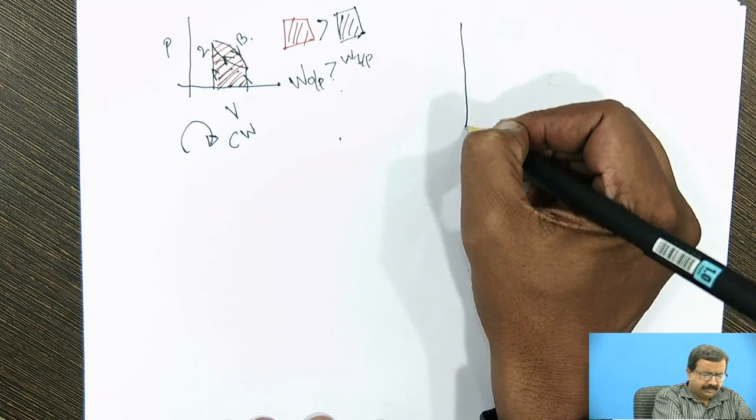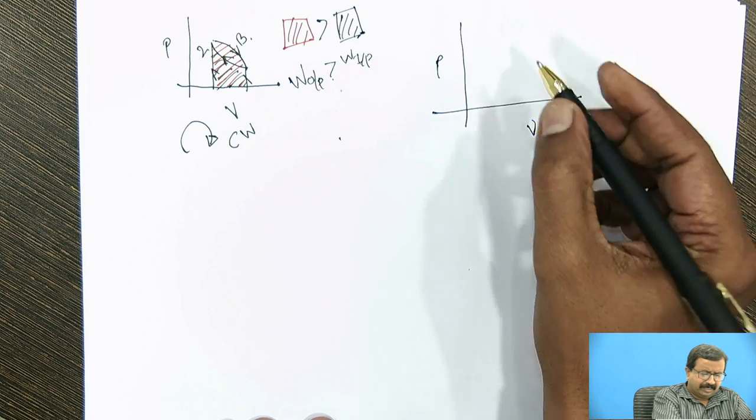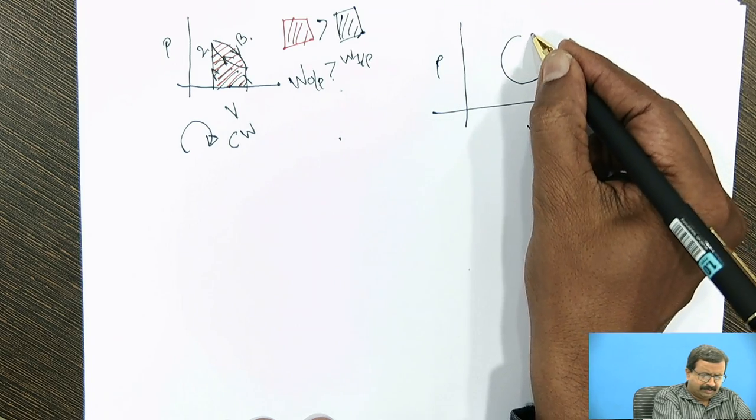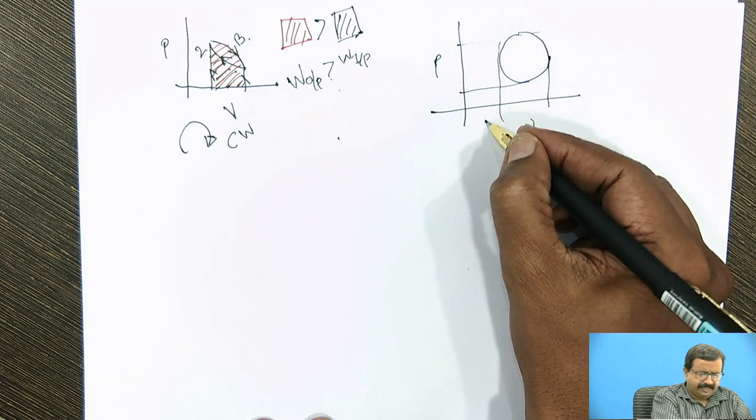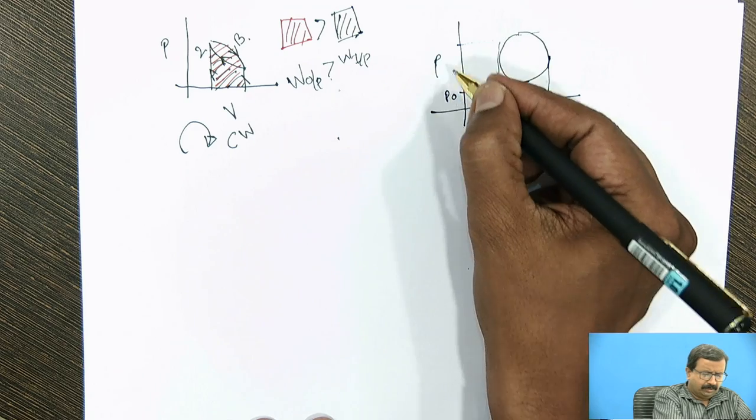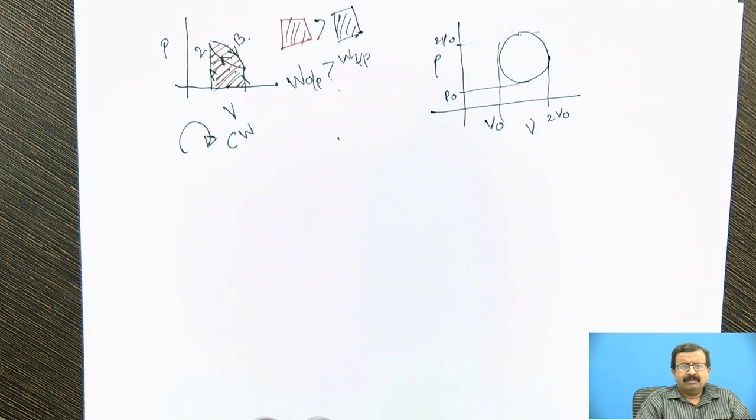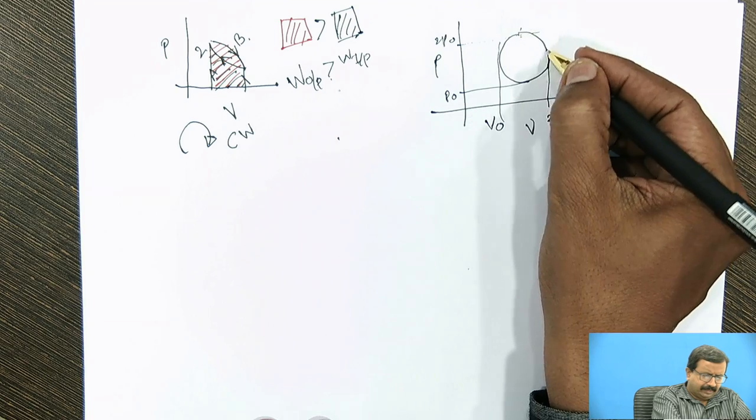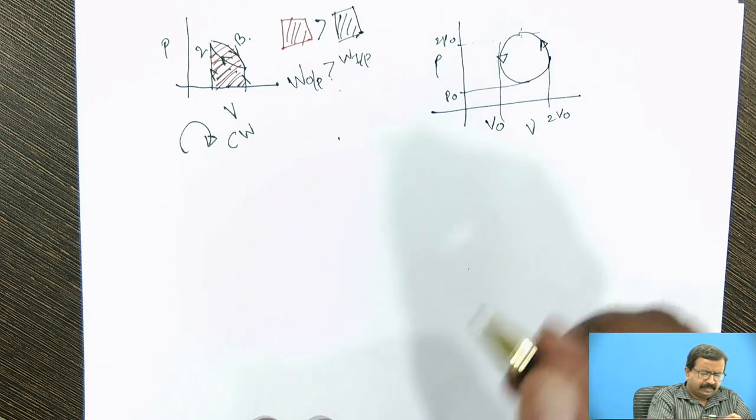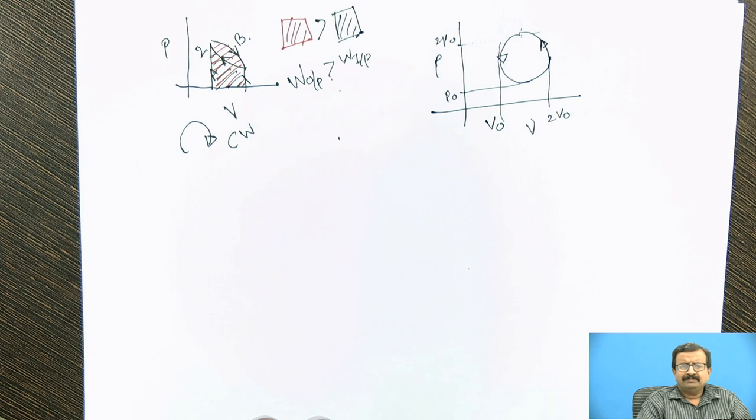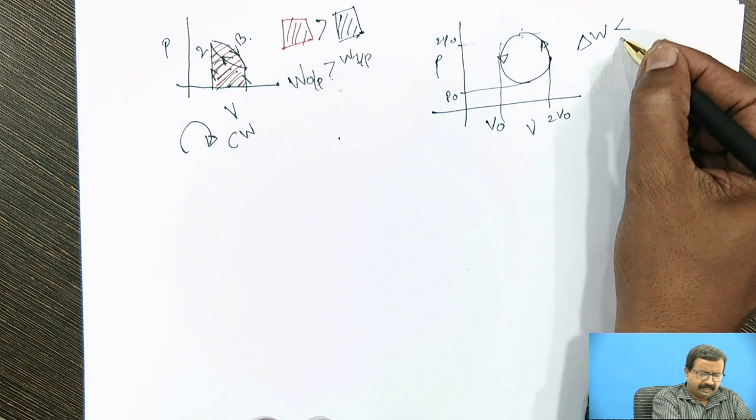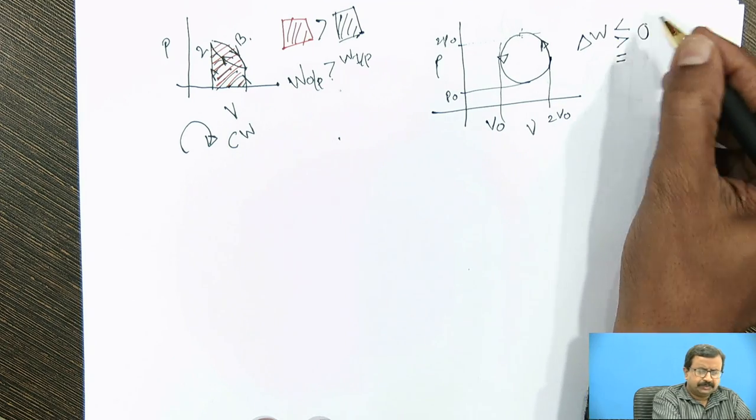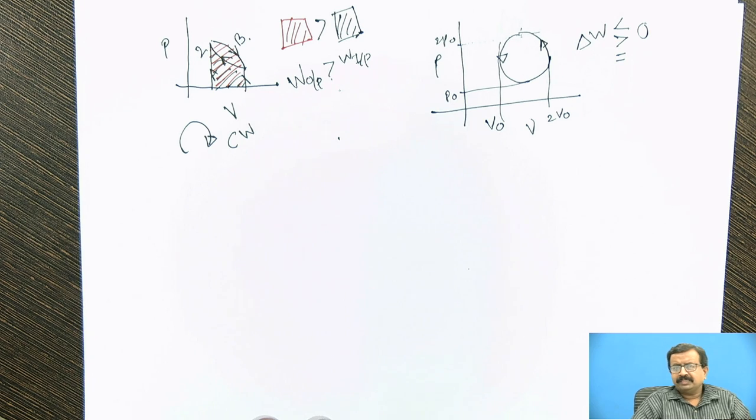On the contrary, if I say this is my p-v diagram for another process, for your simplicity or understanding, I just say these are the volumes and pressures. If I write this as v-naught and 2v-naught, this is p-naught and 2p-naught, and it is a perfect circle with the process from this direction. Now as an understanding or challenge, you evaluate the delta w and tell me the answer whether it will be less than, greater than, or equal to 0. You know if it is equal to 0, no work is done.